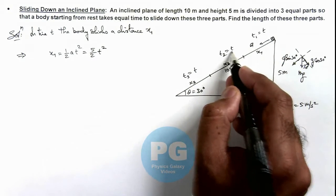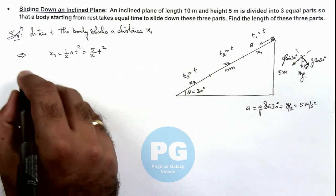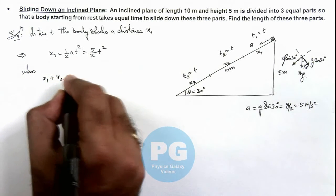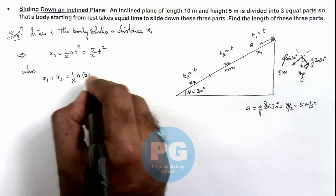And in time duration 2t, it travels a distance x1 plus x2, so we can write x1 plus x2 is equal to half a_y times 2t squared.